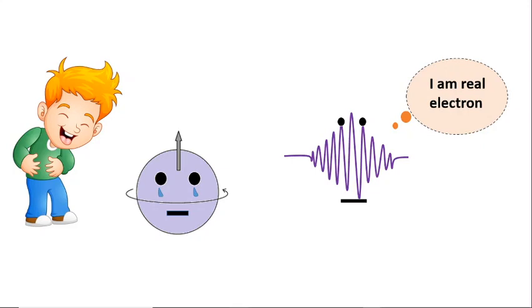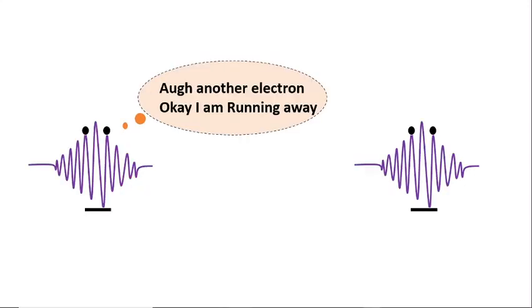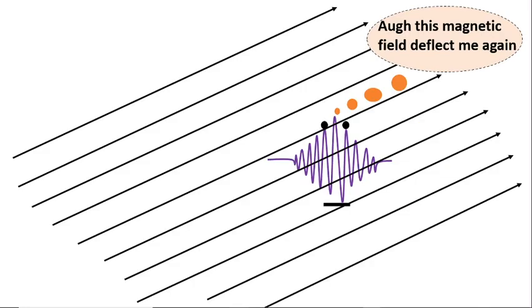But that doesn't mean we cannot measure it. There are experiments by which we can measure these intrinsic properties without visualizing them. For example, mass - we know that protons are heavier than electrons. Like charges repel each other, and charge deflects in a magnetic field.